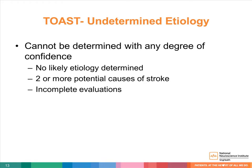Finally, the last category is for strokes of undetermined etiology. This applies when doctors cannot determine the etiology of a stroke with any degree of confidence — either no likely etiology is found after thorough evaluation, the evaluation was incomplete, or two or more potential causes were identified during investigation and it is not certain which is the underlying cause.